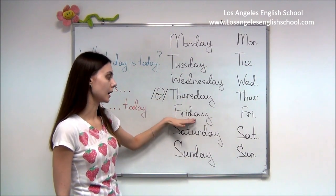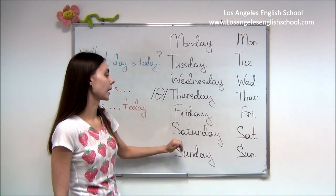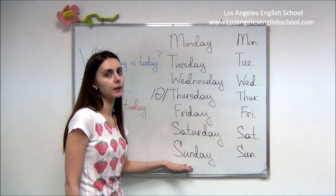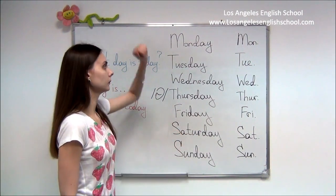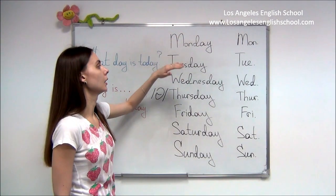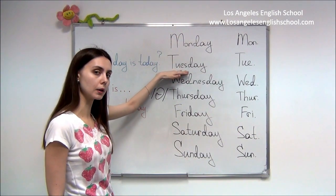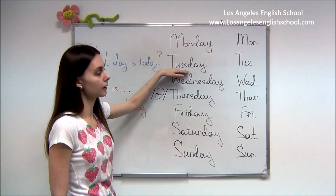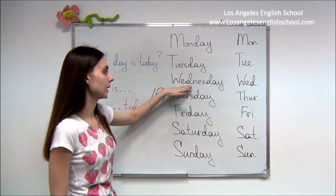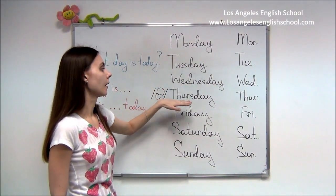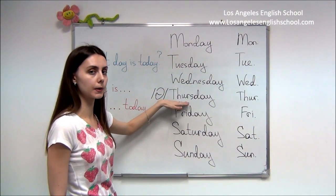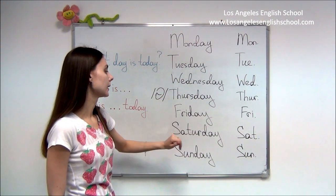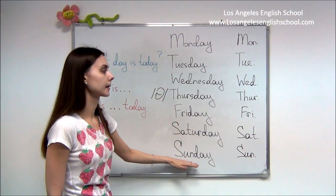Friday, Saturday, Sunday. So let's repeat again: Monday, Tuesday (British), Tuesday (American), Wednesday, TH — Thursday, Friday, Saturday, Sunday.